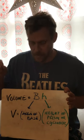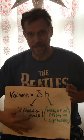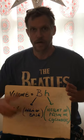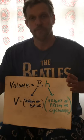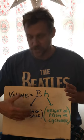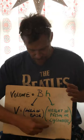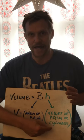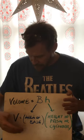Volume is Big B times H. Big B stands for the area of the base. On any prism — a triangular prism's base is a triangle, a rectangular prism's base is a rectangle, a pentagonal prism's base is a pentagon. You find the area of that base — that 2D figure — and then multiply it by H, the height of the prism or the height of the cylinder.